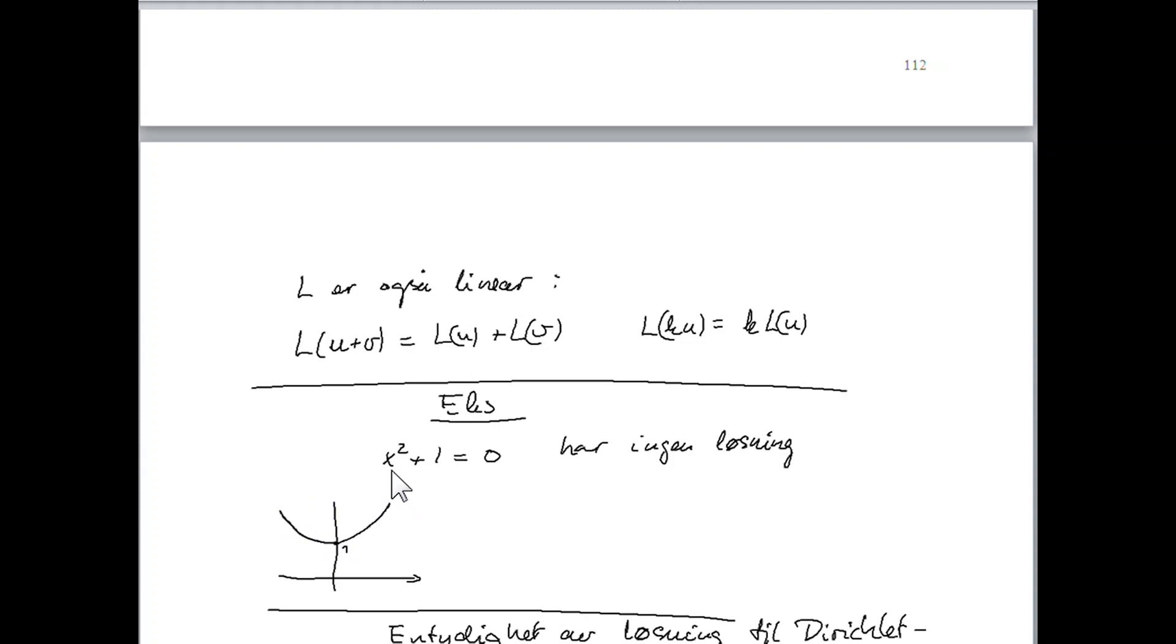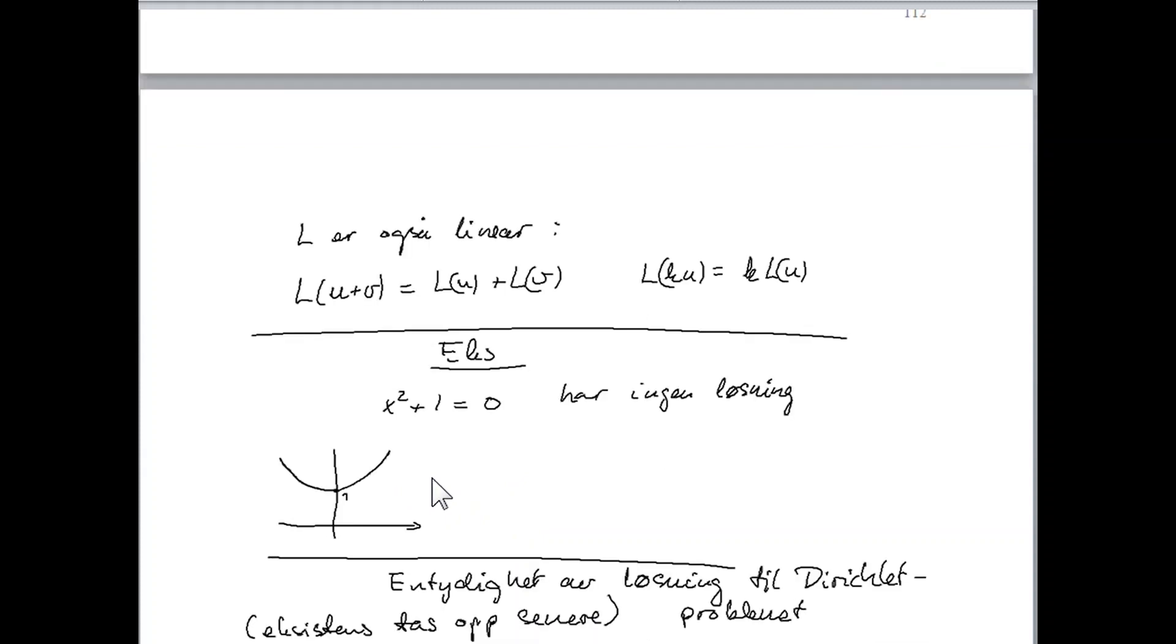The reason for this is that if we just write this function, a graph of this function, it looks like this. And the minimum point is at 1. So it's completely impossible that this function should be equal to 0.